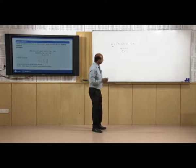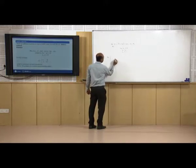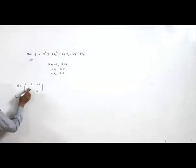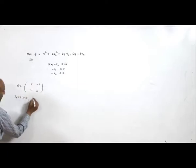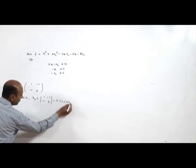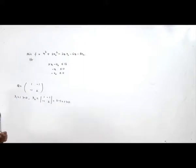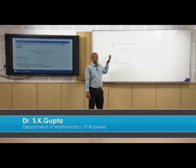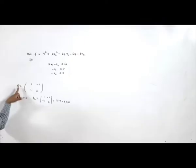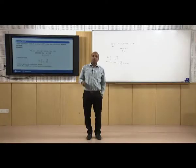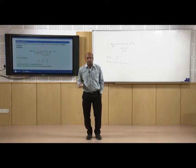Here Q is the matrix with entries 1, −1, −1, 2. Checking positive definiteness: D₁ = 1 > 0, and D₂ = det([[1,−1],[−1,2]]) = 2 − 1 = 1 > 0. So Q is positive definite, the objective function is convex, and this is a convex programming problem. Therefore the KKT conditions we obtain are sufficient.